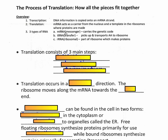So overview really quickly. Transcription is where DNA is transcribed or copied onto an mRNA strand — M standing for messenger RNA. For translation and for transcription, all you need to know is that DNA turns into mRNA and the bases A, T, C, G get transcribed into A, U, C, and G on the RNA strand.